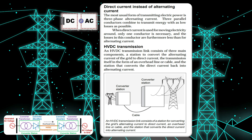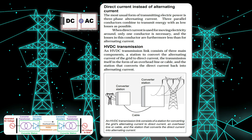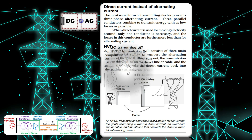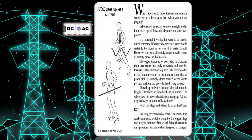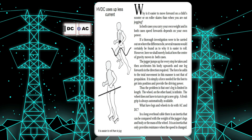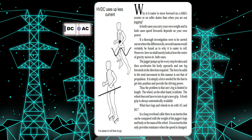High-voltage direct current technology is now also to be used for expanding the power grid in the course of the energy transition. For technical and economic reasons, this technology is preferably utilized for connecting grid interface points far away from each other.